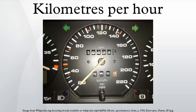Conversions: 3.6 kilometers per hour equals 1 meter per second, the SI unit of speed. 1 kilometer per hour equals 0.27778 meters per second. 1 kilometer per hour equals 0.62137 miles per hour, or 0.91134 feet per second. 1 knot equals 1.852 kilometers per hour. 1 mile per hour equals 1.609344 kilometers per hour. Values in boldface are exact.